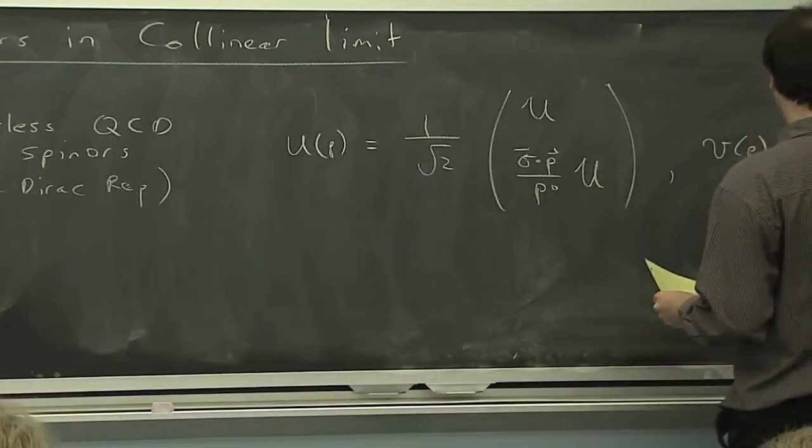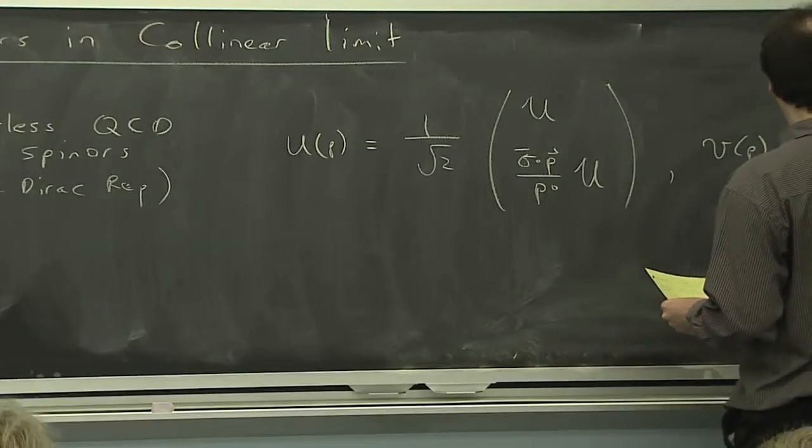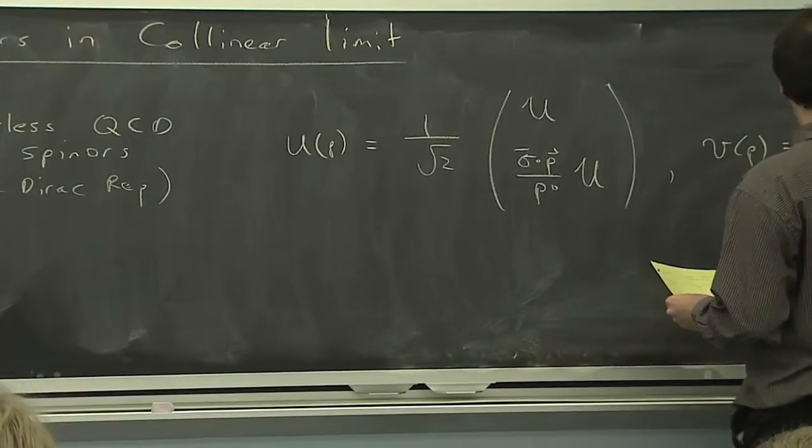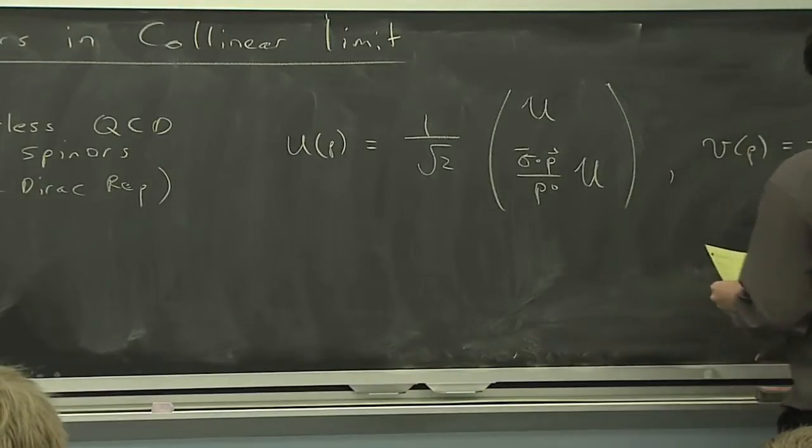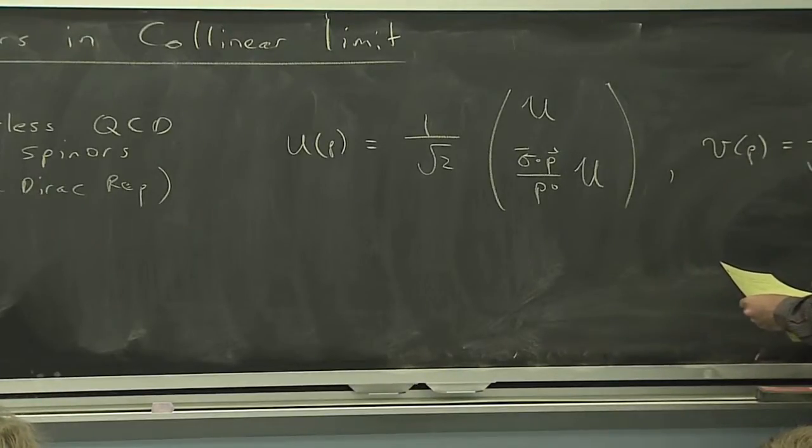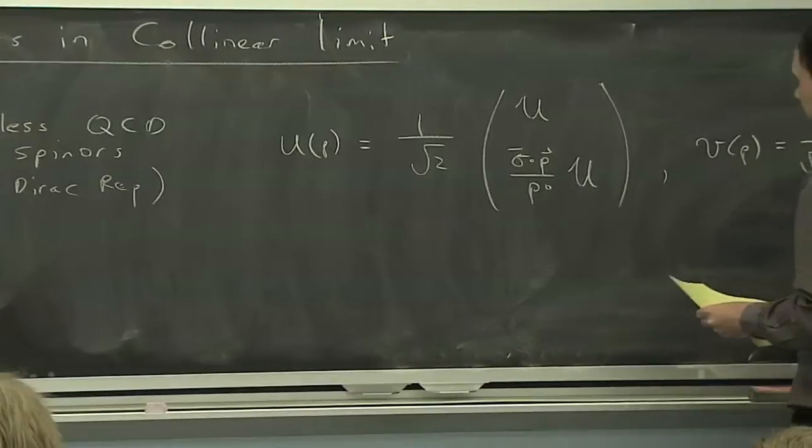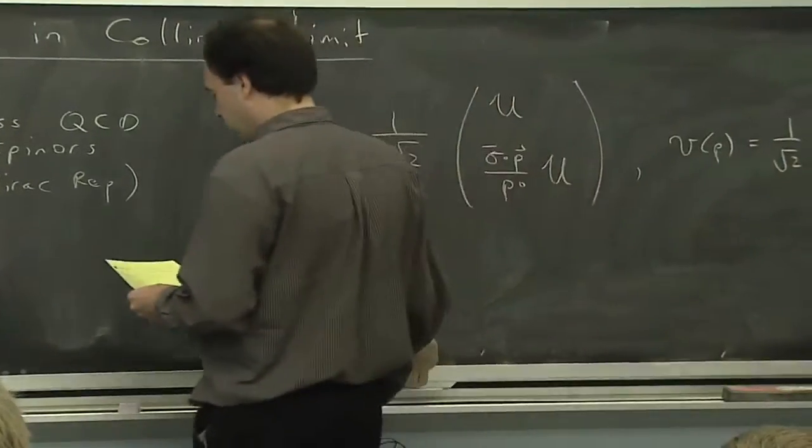So we have spinors for the quarks and we have spinors for the antiquarks, V, where this curly V and this curly U are two-component objects.